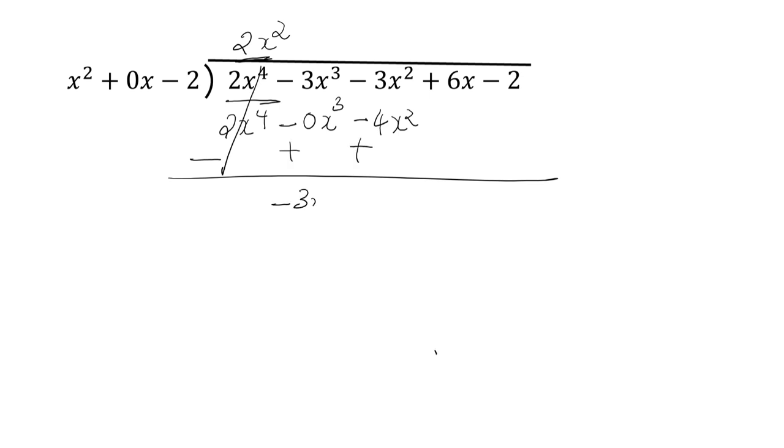Here minus 3x cube. Here positive sign. Minus 3x cube plus x square plus 6x. Then 3x cube divided by x square is minus 3x. Minus 3x into x square, what will you get? Minus 3x cube. Minus 3x into 0x is 0x square. Minus 3x into minus 2, that is plus 6x.